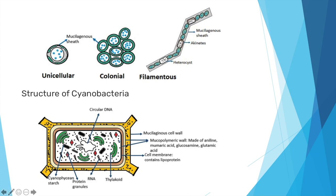This is the structure of cyanobacteria. You can see the cell wall and the membrane. This is the mucilaginous cell wall — the mucopolymeric wall made up of muramic acid, glucosamine, and glutamic acid. This is the cell membrane, which contains lipoproteins. These are the thylakoids, RNA, and protein granules. This is the cyanophysean starch. There is no nucleus or nuclear membrane — this is the circular DNA, known as the incipient nucleus. Unicellular forms show a mucilaginous sheath around; colonial forms are cells arranged irregularly or in a proper shape; filamentous types show heterocysts, akinetes, and the mucilage sheath.